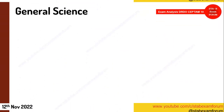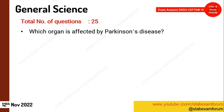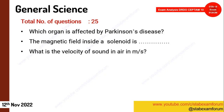Now let's go through the questions one by one, starting with General Science. There were 25 questions. One question asked which organ is affected by Parkinson's disease — the answer is the brain. Another question was on the magnetic field inside a solenoid, which is uniform. A question on the velocity of sound came — it is 330 metres per second.